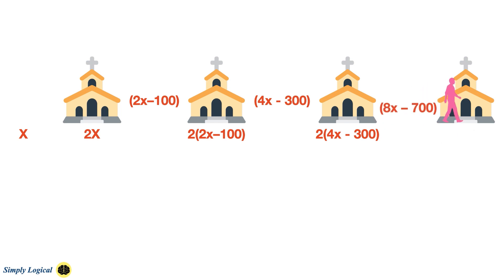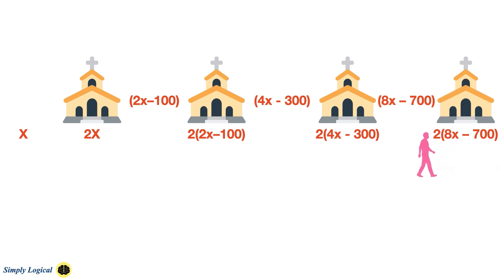And at the 4th church, as soon as he enters the church, his money is doubled. 8x minus $700 is the money left before visiting the fourth church. On his way out, he donates another $100, and he is left with 16x minus $1,500. According to the question, after his last visit, he completely runs out of money.